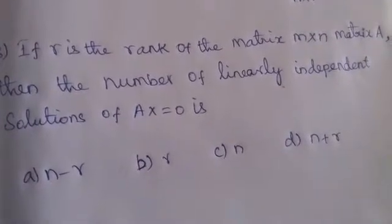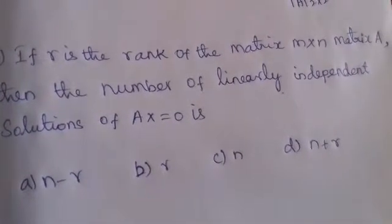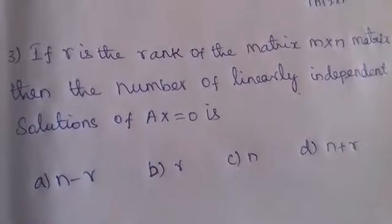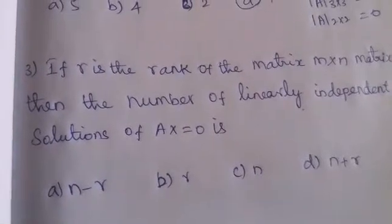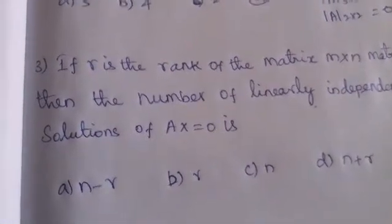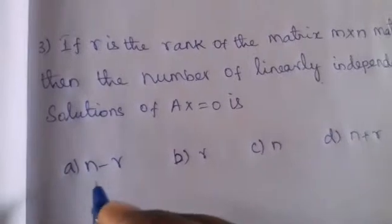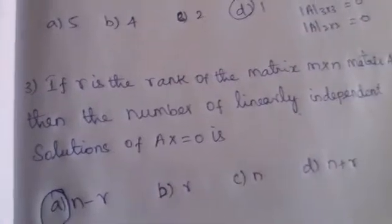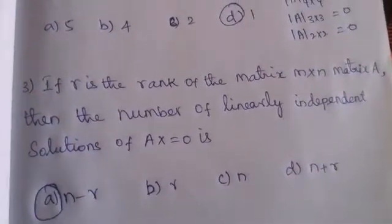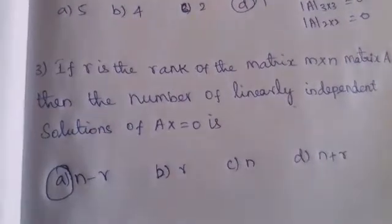Next, if R is the rank of an m×n matrix A, then the number of linearly independent solutions of Ax=0 is n minus r. This is a very important theory result. We have to memorize: the number of linearly independent solutions of Ax=0 is n−r.